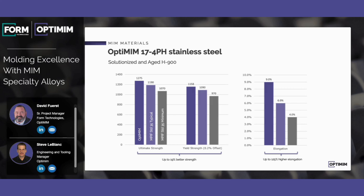The dark blue bars on the left of these charts show OptiMIM's 17-4 properties — ultimate strength, yield strength in the middle, and elongation on the right. In the middle of each chart are typical properties, and the gray bars represent minimum properties. OptiMIM's properties are higher in every case than the typical and minimum properties. Our materials tend to stand out from the rest of the field, due directly to our process controls and the fact that we blend our own feedstock rather than purchasing off-the-shelf, which really gives us an edge.